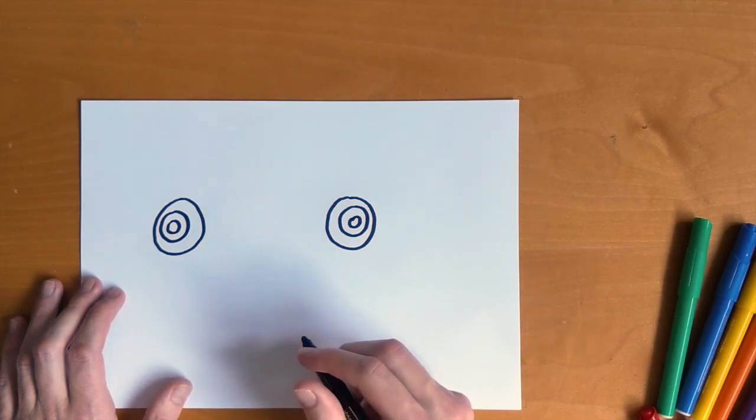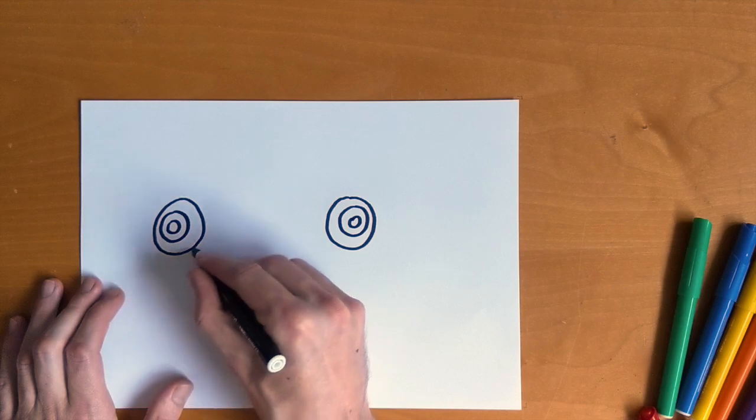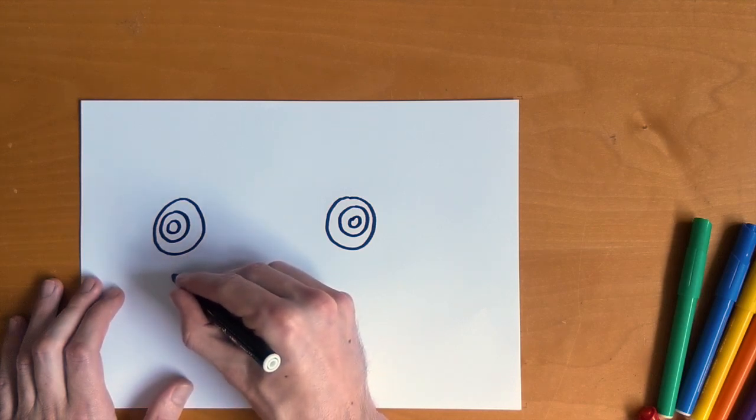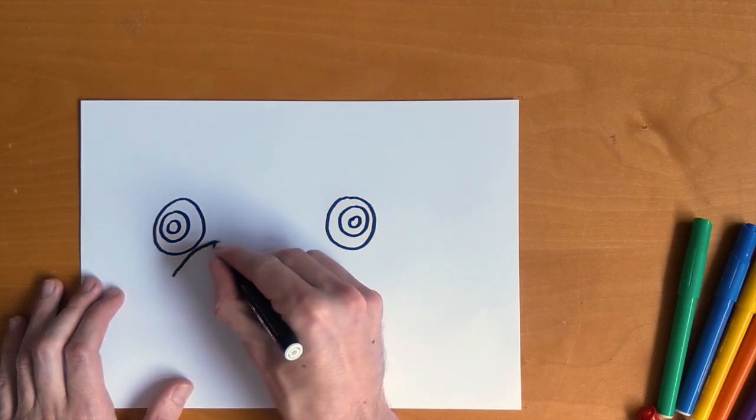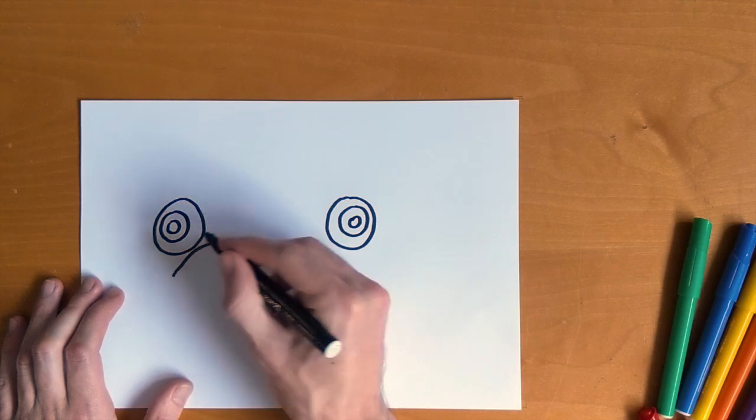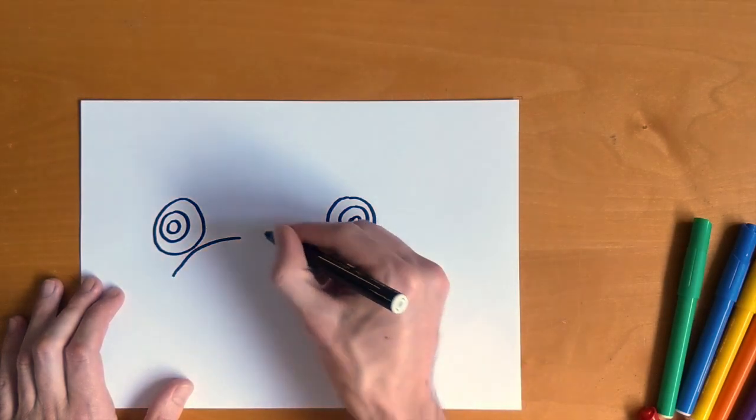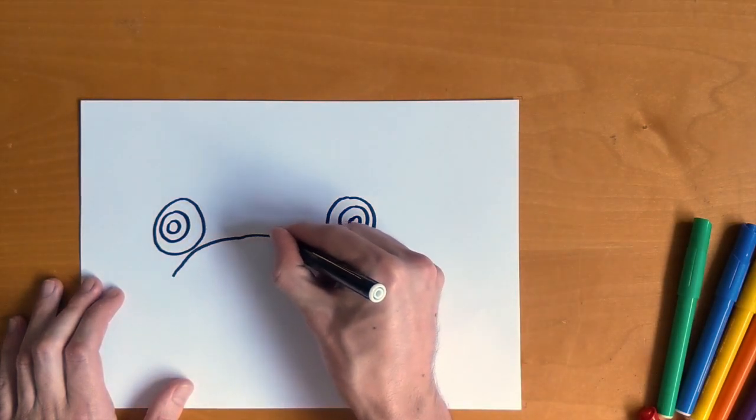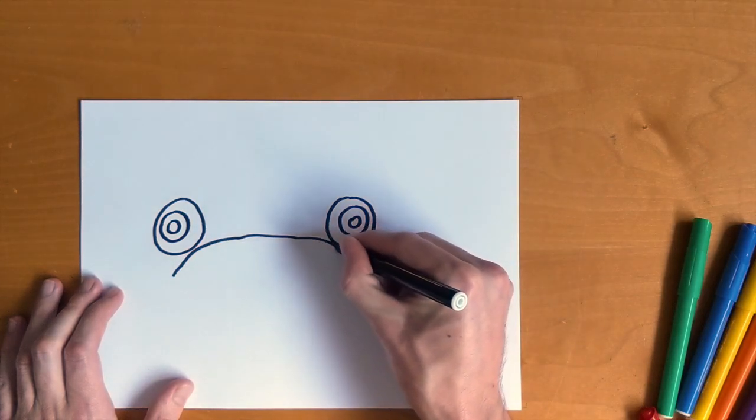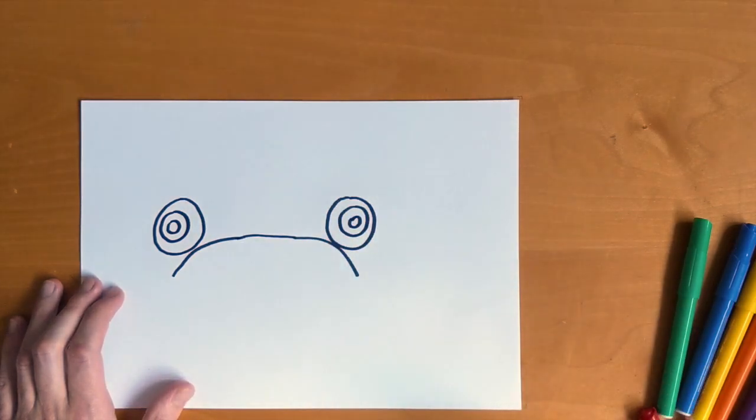So now we're going to draw the sides of the mouth, so what you need to do is a curved line that almost touches or just touches the eye and keep it coming across until the other eye. Make sure it just touches and go down the page a bit and stop.